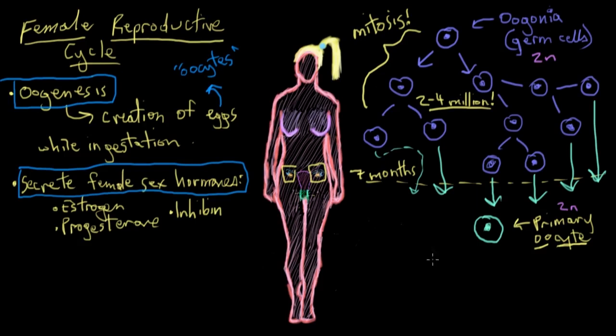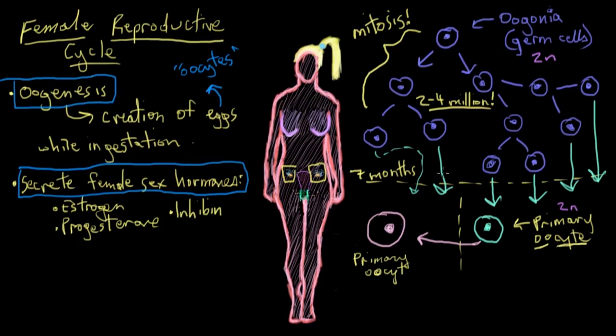These primary oocytes begin meiosis I — the process germ cells use to reduce chromosome copy number. They start meiosis I but don't actually finish it; they get about halfway through and then stop, stuck as large cells still called primary oocytes, said to be in meiotic arrest. So when the female is born, her primary oocytes are in meiotic arrest. Some stay like this, and some don't.